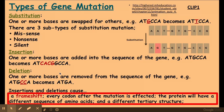Insertions and deletions are more likely to have a bigger impact upon protein structure and therefore function, because they cause a frame shift — where the sequence isn't read as it normally would be. Every codon downstream from the mutation is affected. The protein will have a different sequence of amino acids, a different tertiary structure, and therefore is more likely to have a different function.